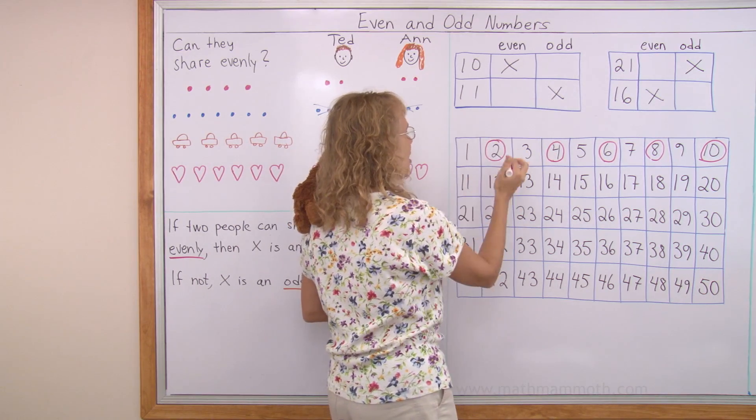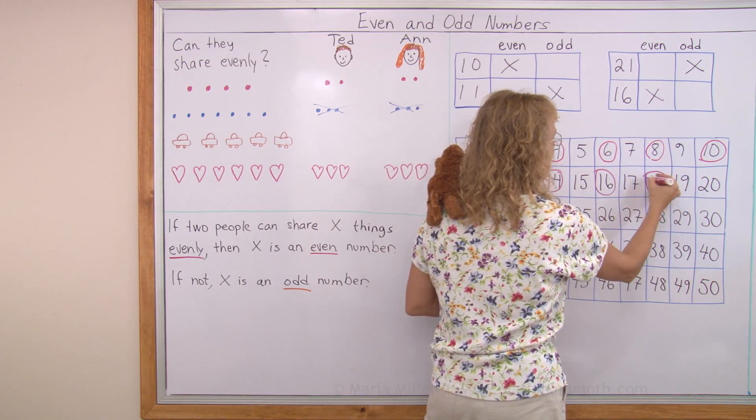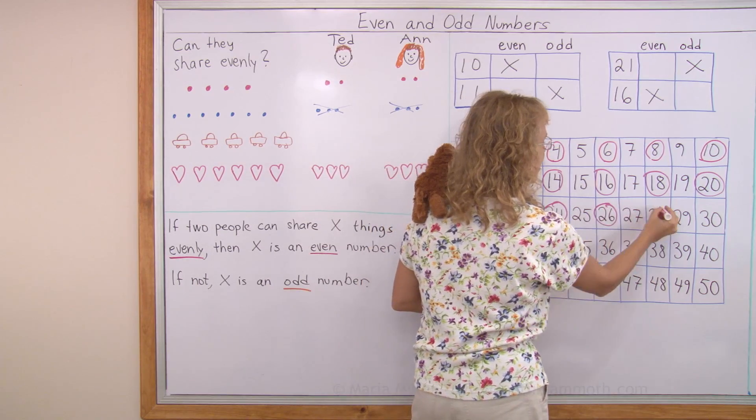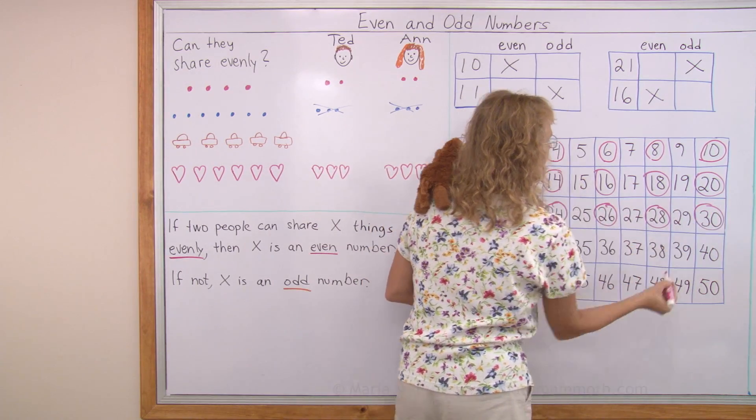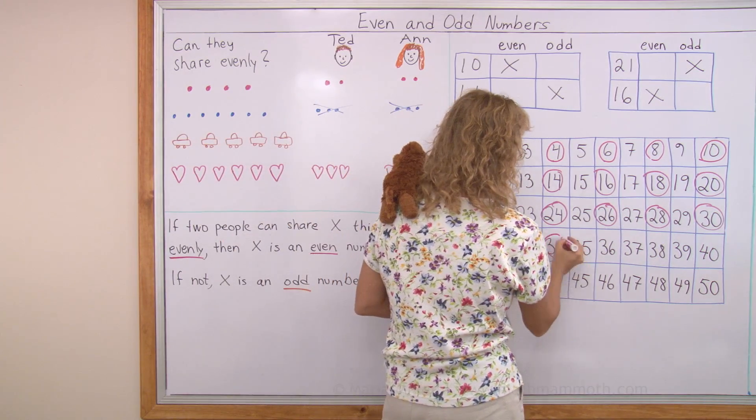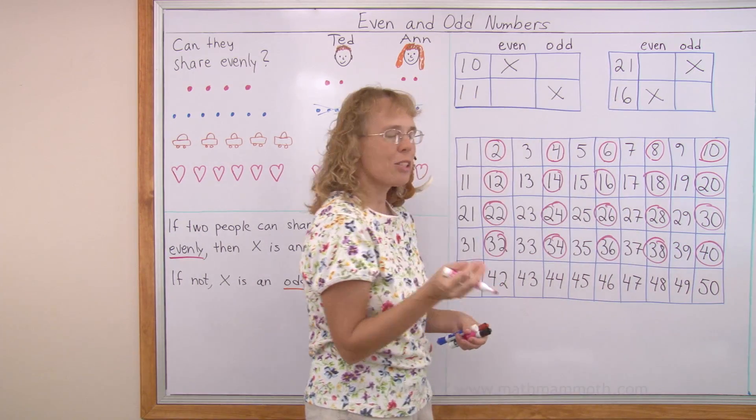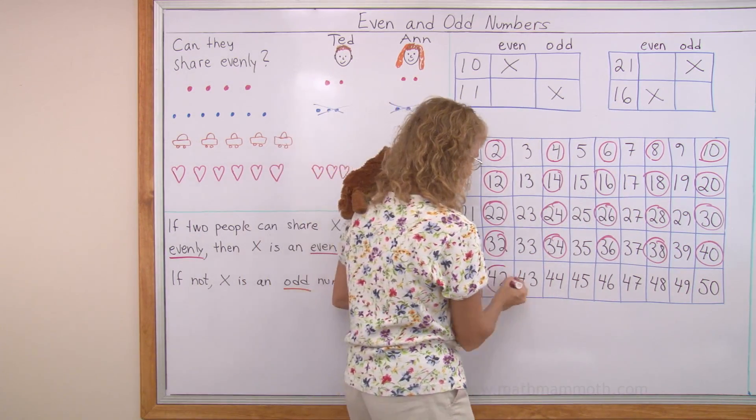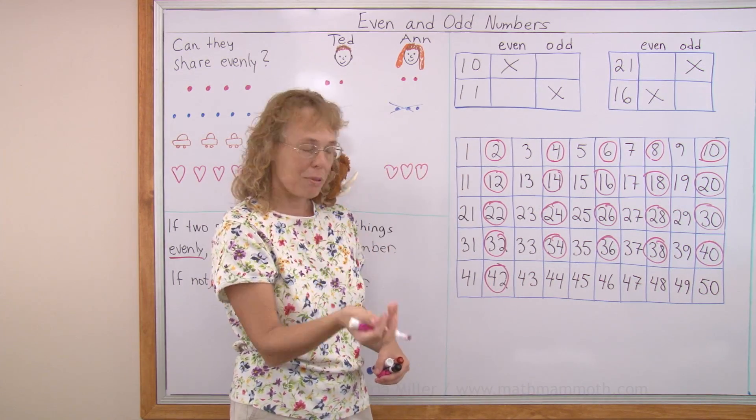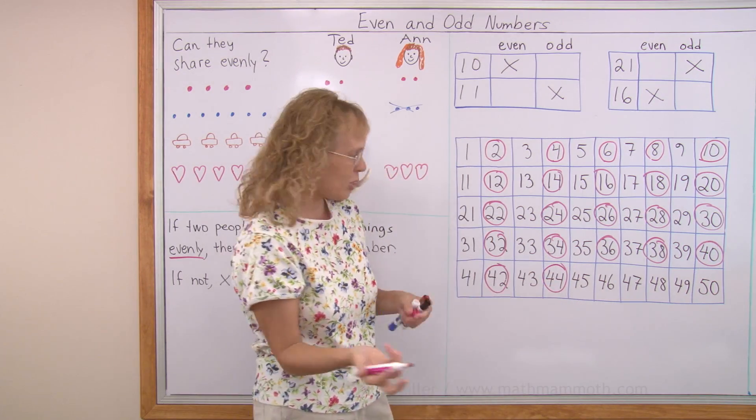Eleven is odd. Twelve is even. You see, every other number is an even number. So, this is how they go in a pattern. And then, of course, the ones I'm not circling are the odd numbers. Forty is an even number, because it would be twenty and twenty, right? Forty-two would be twenty-one and twenty-one. Forty-four would be twenty-two and twenty-two, and so on.